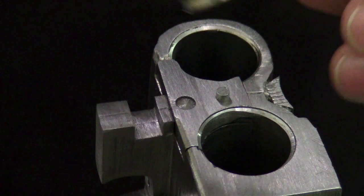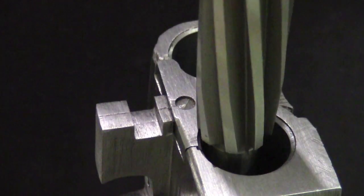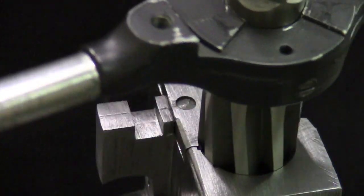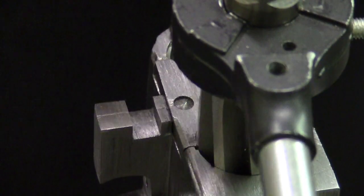A shotgun cartridge case headspaces on the thickness of the case rim. Headspace is the measurement between the rear of the cartridge case and the receiver's bolt face.